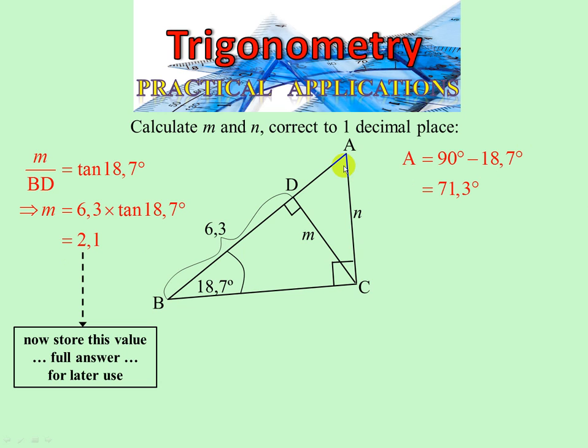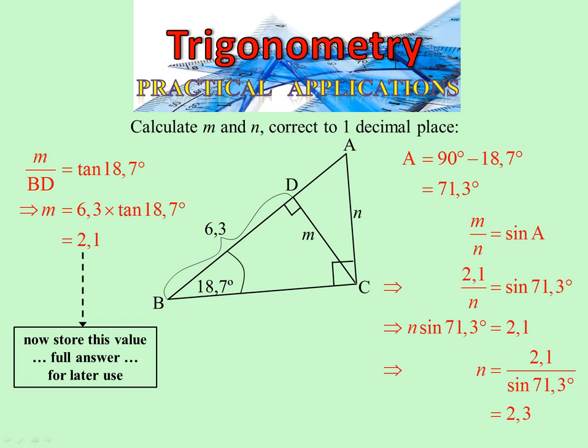Now angle A I'm going to find, because I need to work in this triangle here, and that's 90, so what's left must be 90 in the big triangle. 90 minus. M over N equals opposite over hypotenuse of that angle. It's the Y over the R, therefore sine of A. 2.1 is M, we found it. N we don't know, and sine of 71.3 we found. Multiply up by N, divide by sine of 71.3, and we get 2.3.